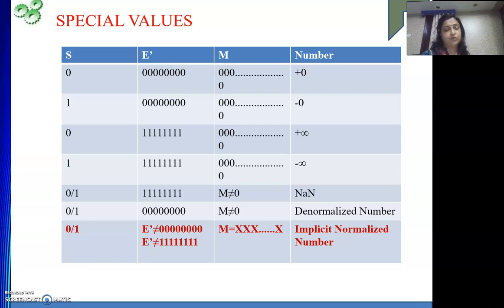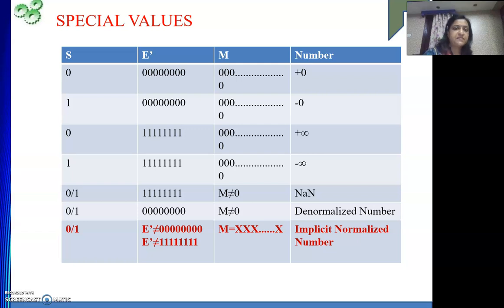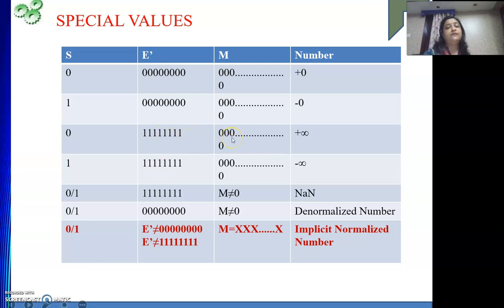Whenever we are doing some calculation and we come across the value 0, the combination S, E' all zeros, M all zeros is used — that is positive 0. If S is 1, then it is negative 0. Both are the same; positive 0 and negative 0 are not different. The next special value is infinity — something divided by 0. Whenever the denominator is 0, E' will have all 8 bits as 1 and M will be taken as 0. S may be 0 or 1.